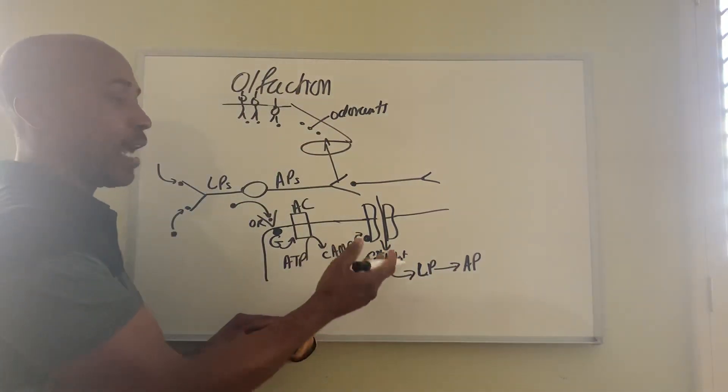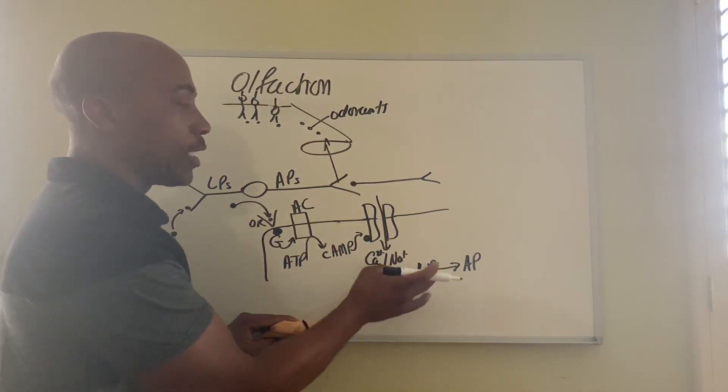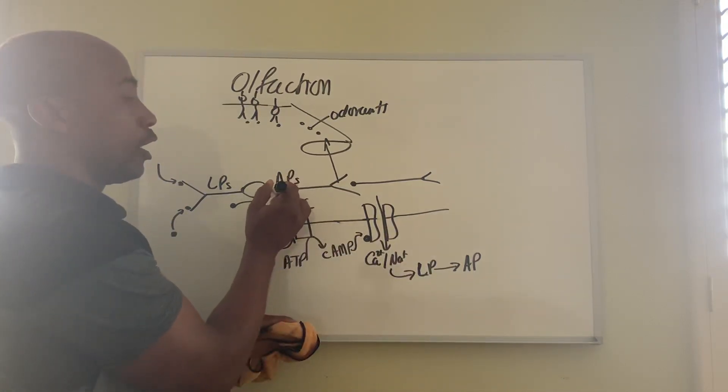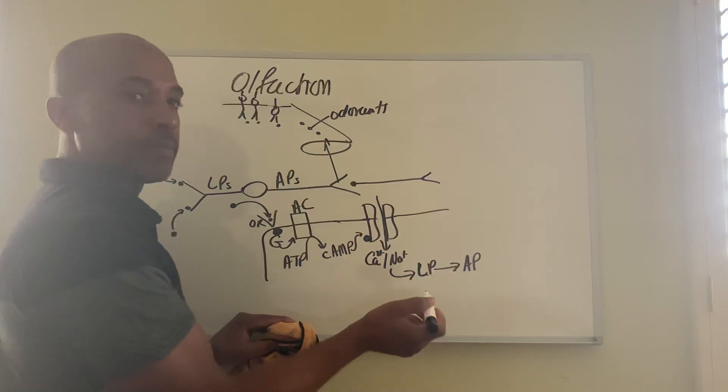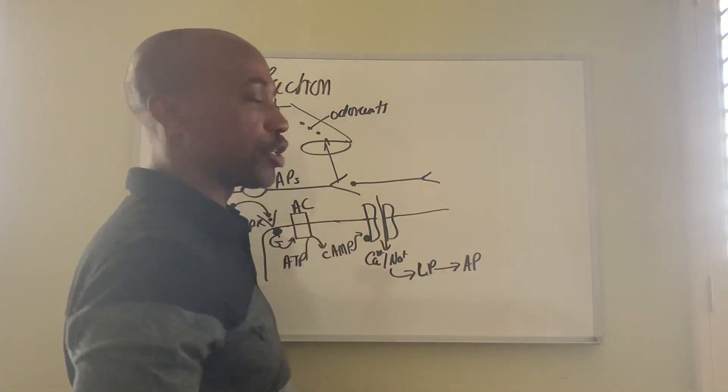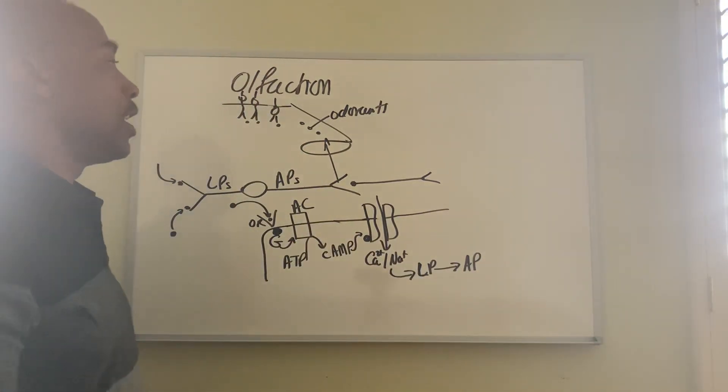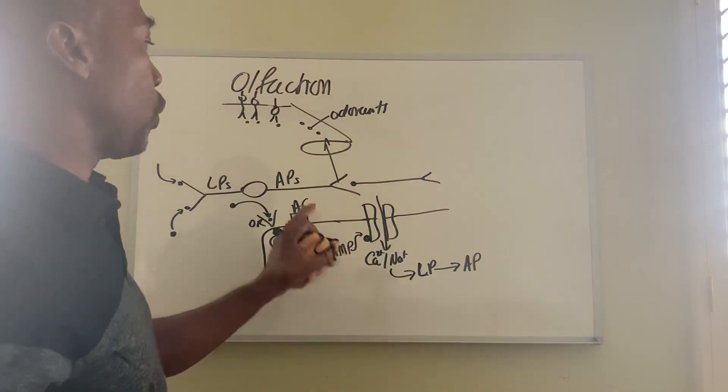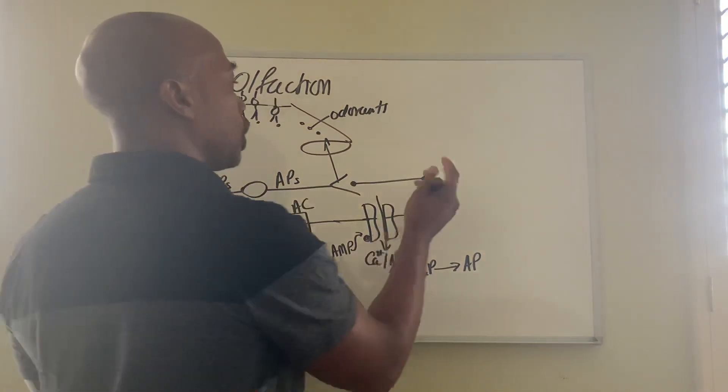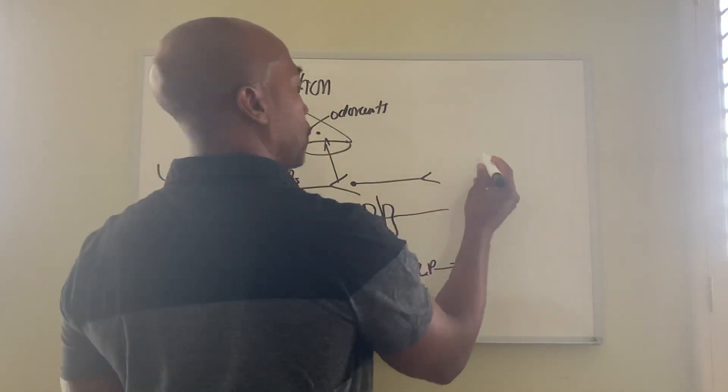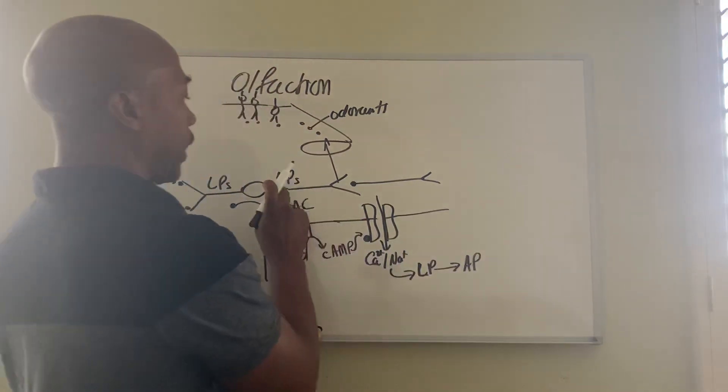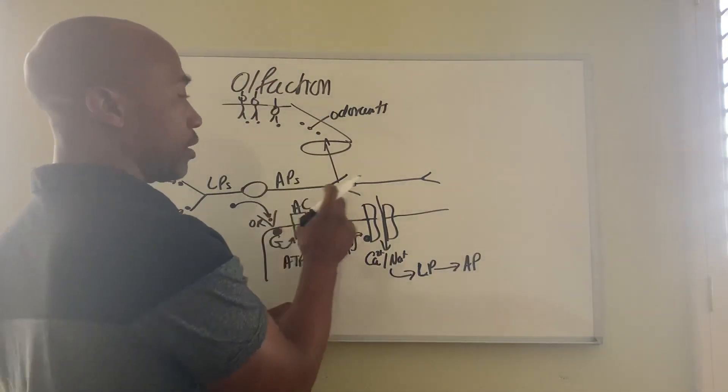That would eventually add up to threshold to cause the neuron, this neuron, to fire an action potential, and then there you go, the pathway has started. Now once the neuron is activated, so let's follow it. You create action potential in the bipolar neuron, first order neuron.